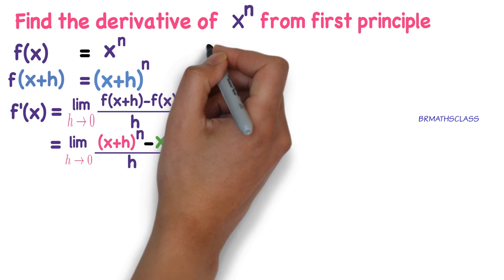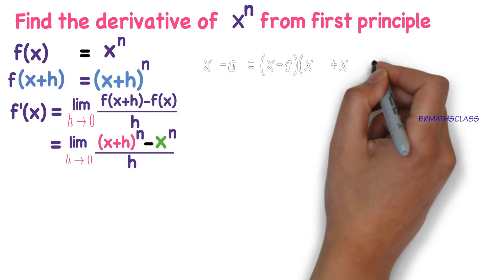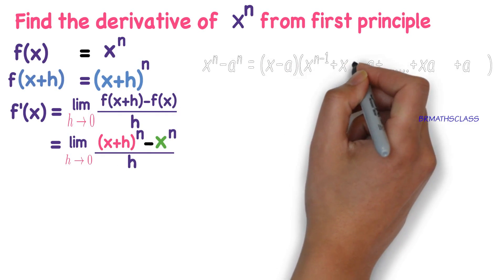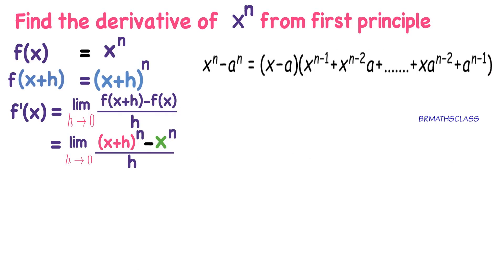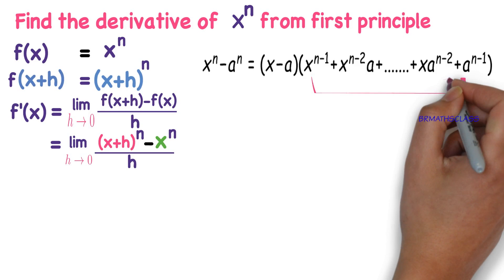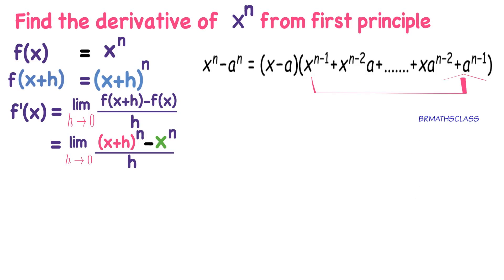The numerator is of the form x power n minus a power n. What is the formula for x power n minus a power n? The formula is x minus a, into x power n minus 1 plus x power n minus 2 into a, plus and so on, plus x into a power n minus 2, plus a power n minus 1. Total how many terms are there? There are n terms.